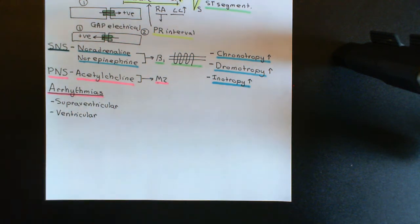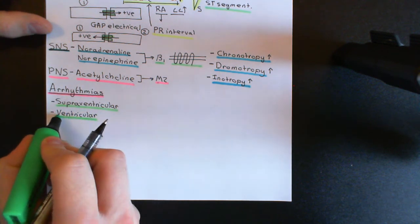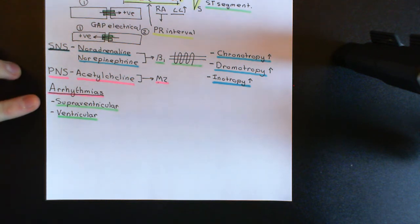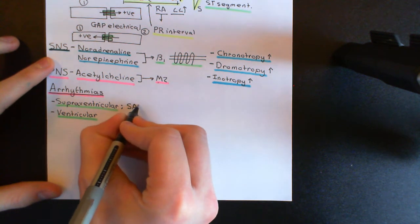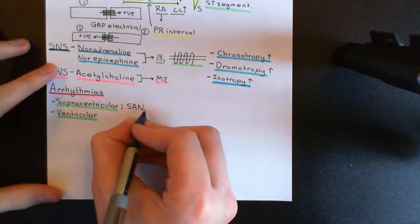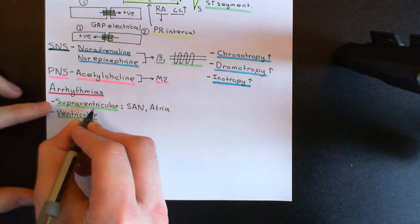These names are logical. A supraventricular arrhythmia is one that results because of a problem that occurs before the ventricles, and a ventricular arrhythmia is one that occurs because of a problem that is within the ventricles. We've discussed how an arrhythmia is a problem with the electrical signalling within the heart, which then leads to a problem with the cardiac rhythm. If the problem is originating within the atrioventricular node or above - for instance, in the sinoatrial node - then that would be counted as a supraventricular arrhythmia because it's above the ventricles. "Supra" just means above. If the problem with the electrical signalling was occurring in the atria, then that would also be counted as a supraventricular arrhythmia.